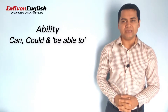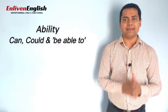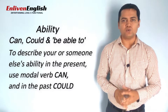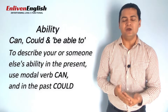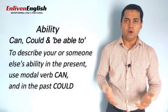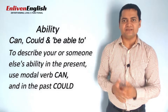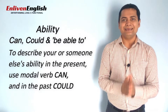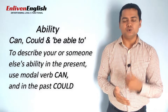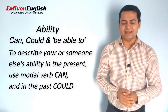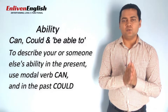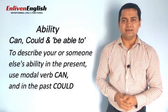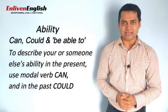What sets all of us apart from each other is our ability to do something. Every day we have to tell others what we or others are capable or incapable of, or what ability or inability we or others have. If we have to talk about ability in the present, then we'll use the modal verb 'can', and if it is in the past, then we can use 'could'. Let's see some examples to understand this better.